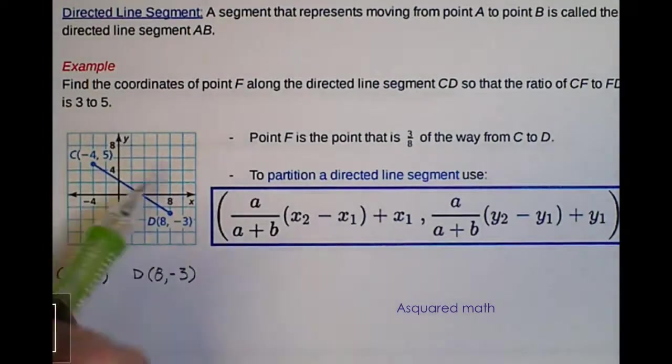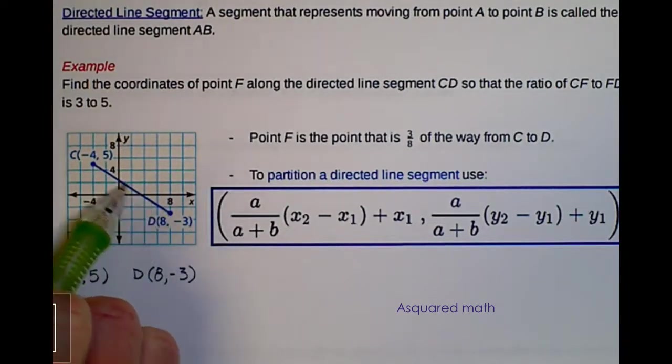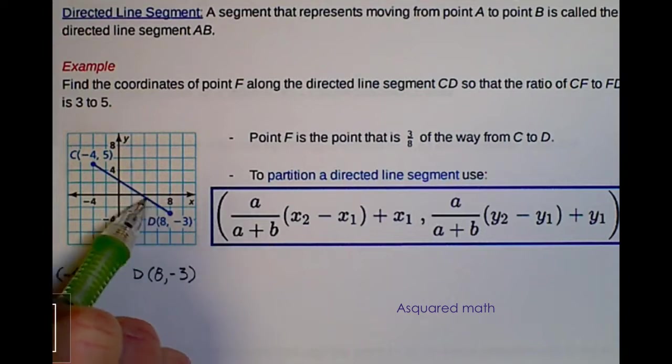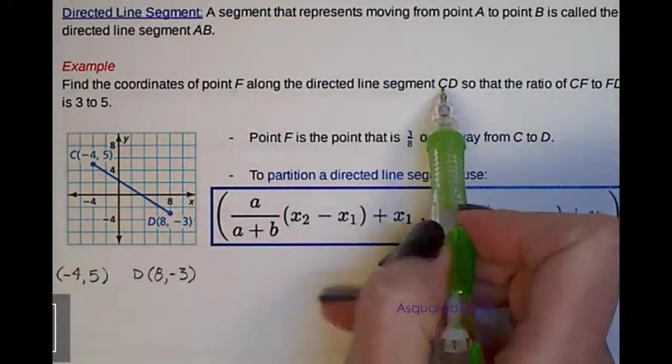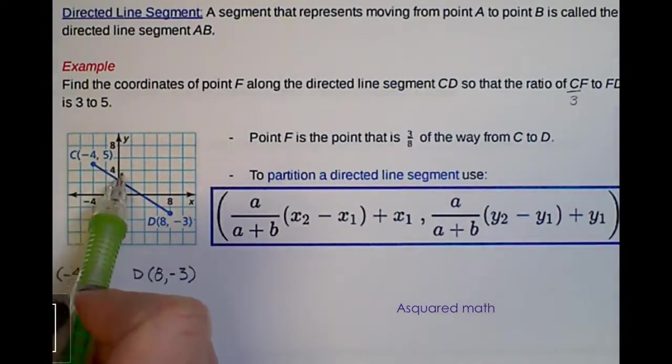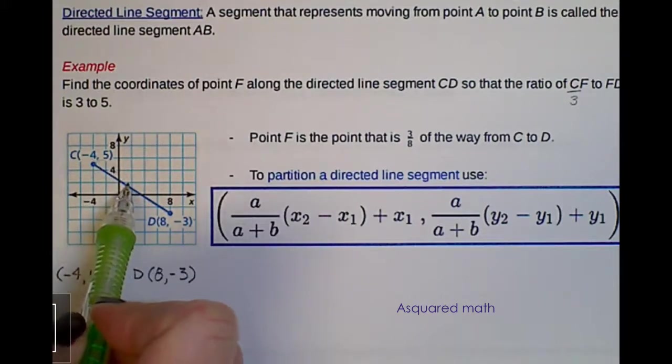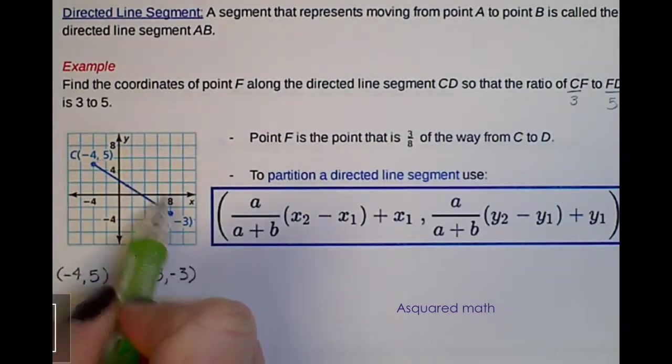So we're given this picture here, and we have somewhere on here there's a point F, and it has some coordinate, and it gives us a ratio of going from C to point F is 3. So we're going to go somewhere here, and this distance is going to be 3 parts, and then the remaining parts is going to be 5 from F to D.